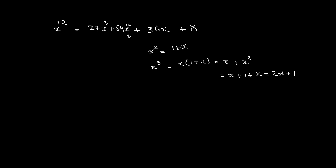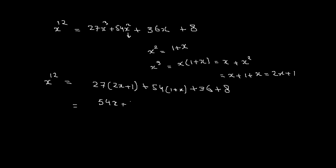Substituting all values: x¹² equals 27(2x plus 1) plus 54(1 plus x) plus 36x plus 8. This gives 54x plus 27 plus 54 plus 54x plus 36x plus 8. Combining like terms: the x terms give 54 plus 54 plus 36 equals 144x, and the constants give 27 plus 54 plus 8 equals 89.